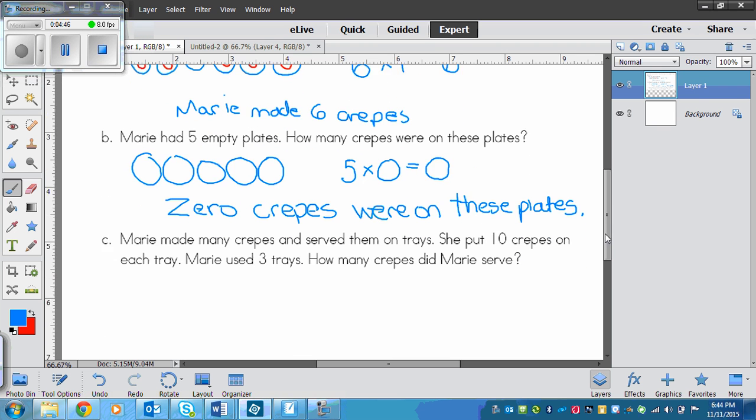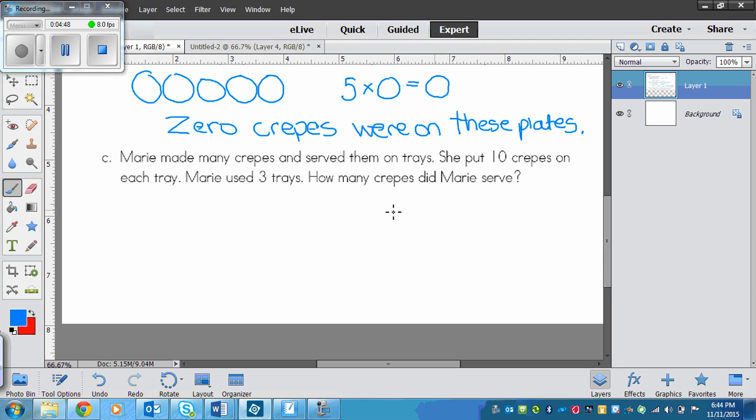And the last one on this page. It says, Marie made many crepes and served them on trays. She put ten crepes on each tray. Marie used three trays. How many crepes did Marie serve? So we could draw a picture again to visualize. So we know that she has three trays and ten crepes on each tray. So if I draw one tray, two trays, and three trays, and I know there are ten on each.